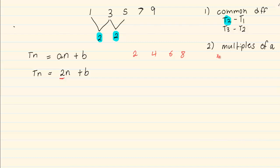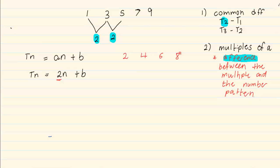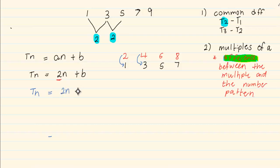What I'm trying to do is find the difference between the multiples and the number pattern. The number pattern is 1, 3, 5, 7. To move from 2 to 1, or from 4 to 3, you would notice that I would have to subtract 1. So my formula becomes TN is equal to 2N minus 1.